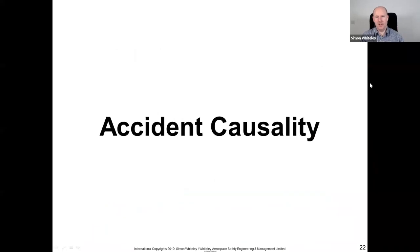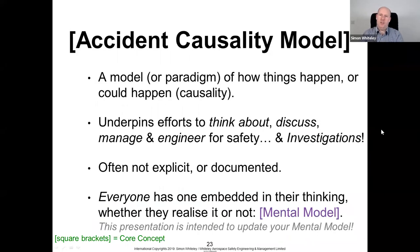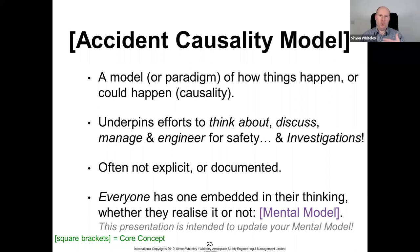Let's talk about the theory very quickly. An accident causality model is essentially a model, belief, or paradigm about how things happen — and it underpins efforts to think about, discuss, manage, and engineer for safety, as well as how to structure investigations. These models are not often explicit or documented; everyone ultimately has one embedded in their thinking, whether they realize it or not, forming one of your many mental models.